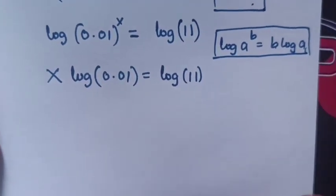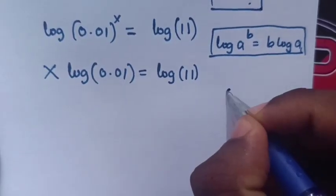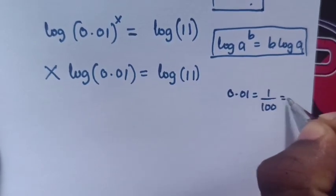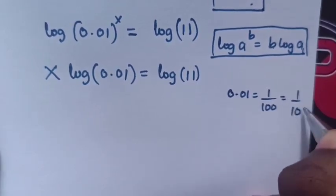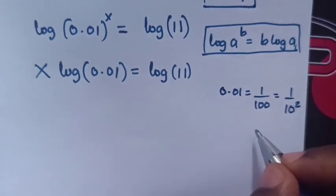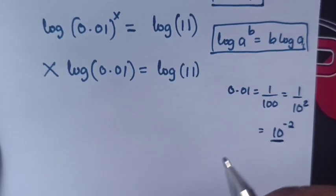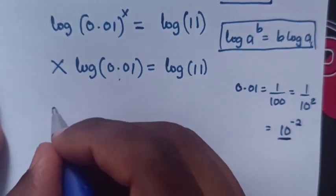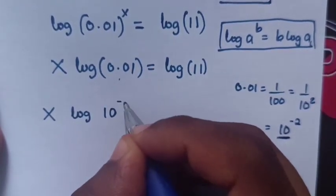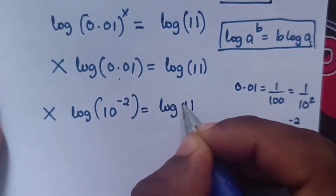Now, 0.01 is the same as 1/100, which equals 1/10^2, and in exponential form is 10^(-2). So we substitute here, and it becomes x·log(10^(-2)) = log(11).